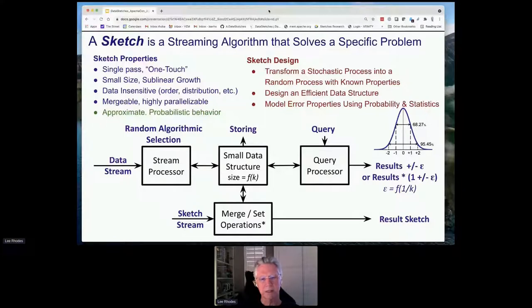The way sketches are structured is into four basic components. There's a front-end stream processor that uses random algorithmic selection processes to choose the data from the stream. It's closely associated with a small data structure which is a function of a parameter we call K. This parameter K influences the overall accuracy. You as a user have influence over this property K. The larger you make K, the more accurate the sketch, of course, the larger the more space the sketch consumes in memory or when stored.